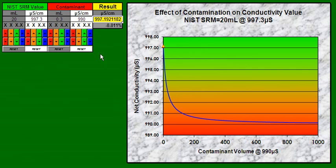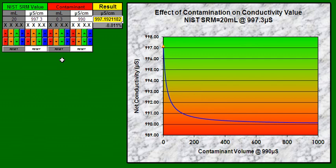The chart's blue line indicates that as you increase the volume of the contaminant — let's say you estimate too low and it actually should be higher — that's going to drop very quickly the value of the SRM from 997.3 to some value below that.